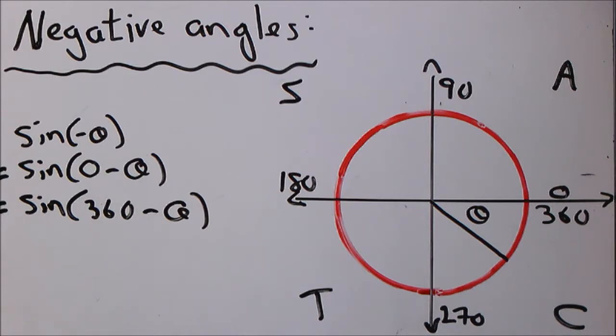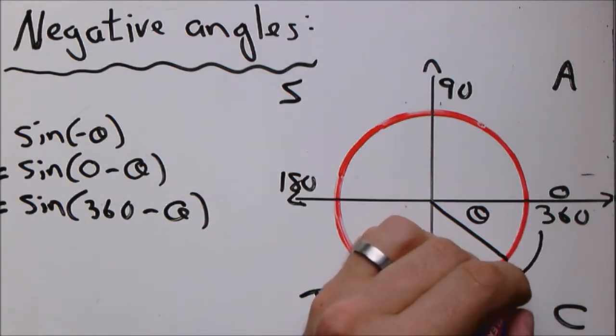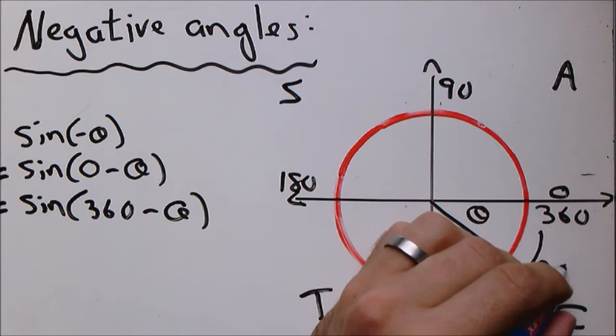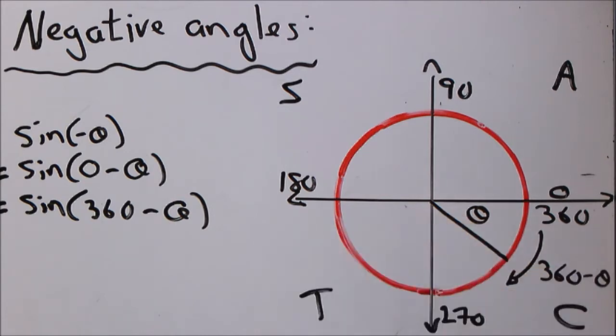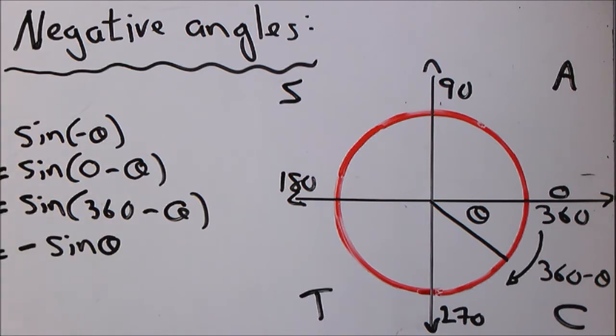My question to you is in the fourth quadrant where is 360 minus theta, what is sine? You will notice that sine is negative. And this is the first part of a negative angle, just expressed in terms of sine.